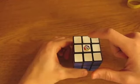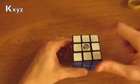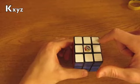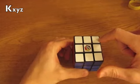And lastly, we define the corners as k sub x, y, and z, where x, y, and z are the adjacent colors. An example of this would be k sub red, white, and blue.